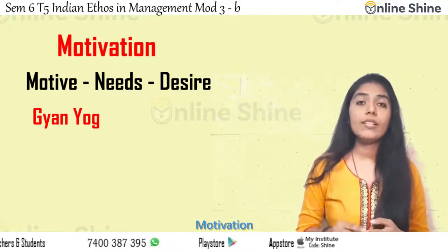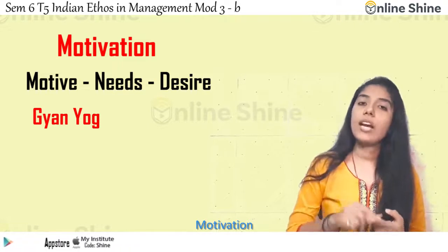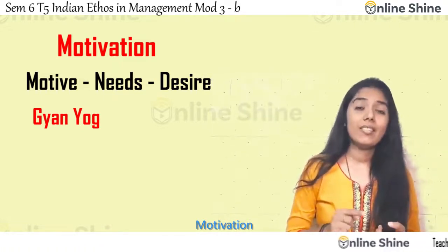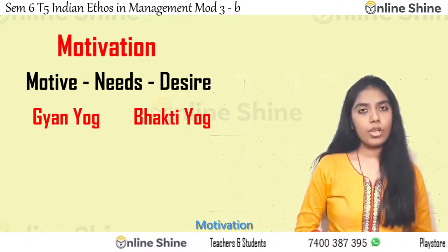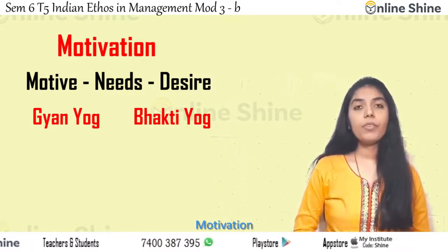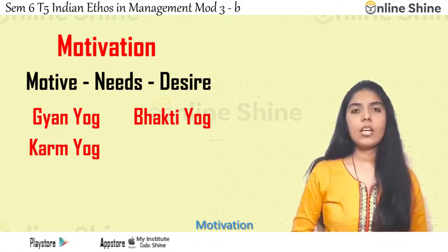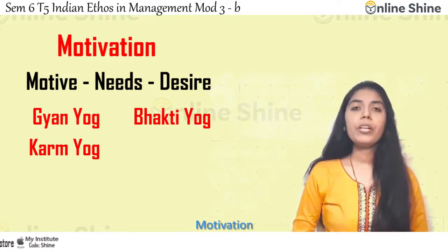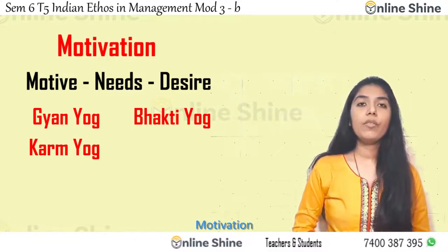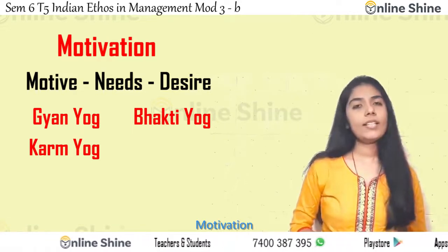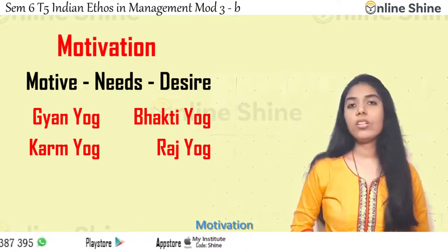The first Indian approach is Gyan Yoga — the knowledge of what is right and wrong, where a person is motivated by discussion and debate. The next type is Bhakti Yoga — the emotional part, in which a person believes that devotion will help satisfy psychological needs. The next type is Karma Yoga — action-oriented yoga, where a person believes that right action will fulfill needs. The next is Raj Yoga, which is like mastery — internal transformation will bring change.